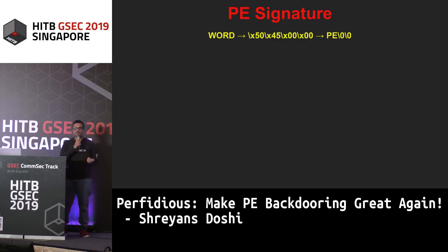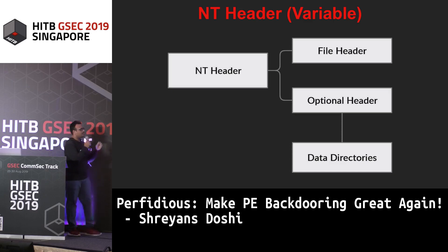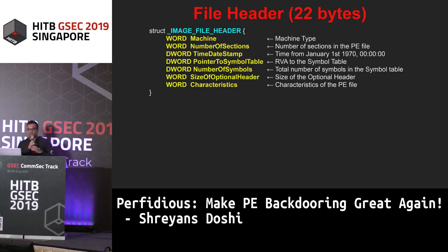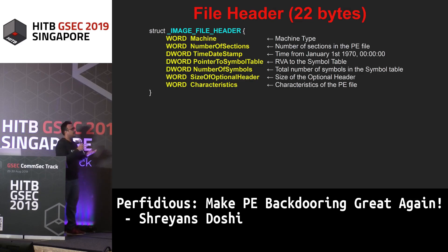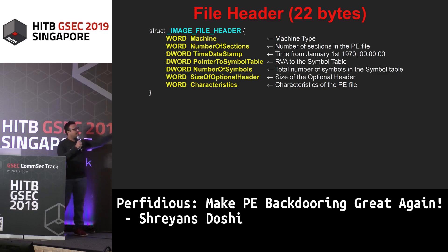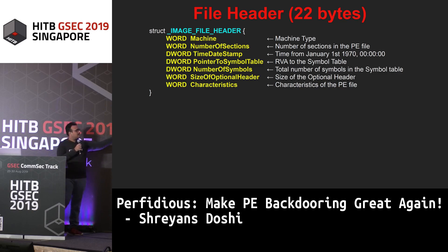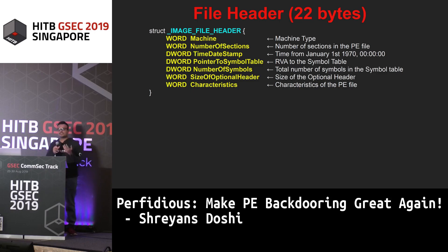The PE signature is 'PE' followed by two nulls, marking the start of the NT header. The NT header is composed of the file header and optional header, with the optional header pointing to the data directories table. The file header is important metadata about the entire PE file: it specifies what type of machine the file can run on, the number of sections, the time-date stamp indicating when it was compiled, the pointer to the symbol table, number of symbols, size of the optional header, and the characteristics — specifying what security provisions like Control Flow Guard are enabled.